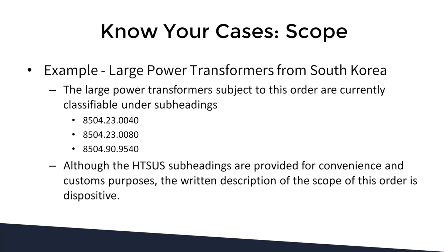The most important part at the end of the scope is this line: although the HTSUS subheadings are provided for convenience and customs purposes, the written description of the scope of this order is dispositive. That means if your goods fall under a new HTSUS code or are slightly different from the three provided, they are still subject to the anti-dumping and countervailing duty order. The HTSUS number does not define whether goods are subject to the order — the description does. Use the HTS codes as a starting point, but don't assume your goods aren't subject if they don't fall under those codes.